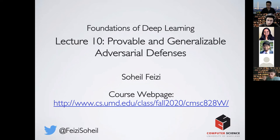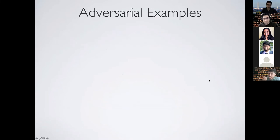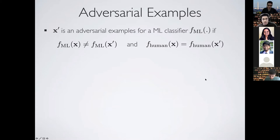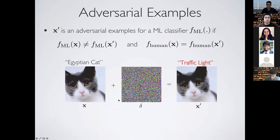Unlike last time, today we are going to use slides in order to cover more space. We know what adversarial examples are — these are examples like x-prime where humans classify x and x-prime the same way, but a model would predict different labels for x and x-prime.